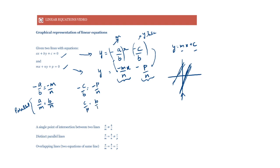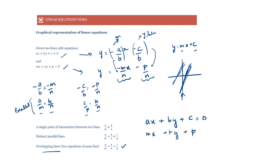What if the y-intercepts are also the same? Then both lines lie on top of each other — they are overlapping. In that case, minus c by b equals minus p by n, or c by p equals b by n. For overlapping lines, all points of x and y are common to both. So for overlapping lines: a by m equals b by n (same slopes) and b by n also equals c by p (same y-intercepts). Writing equations as ax plus by plus c equals 0 and mx plus ny plus p equals 0, overlapping lines satisfy a upon m equals b upon n equals c upon p.